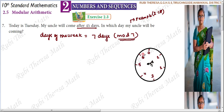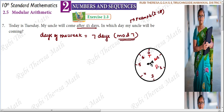The remainder should be less than the divisor, so we stop at 6. We start from 0. If we choose the days of the week, we can name them. Wednesday, Thursday, Friday, Saturday, Sunday, Monday.